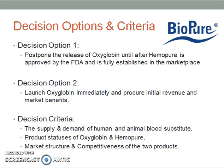The second option was to launch Oxyglobin immediately and procure initial revenue and market benefits. This was supported by Andy Wright, the Vice President for Veterinary Products, since he believed that Oxyglobin would provide the company with initial revenue to later launch Humapure. He also believed it would be a good opportunity to test the blood substitute product in the market.